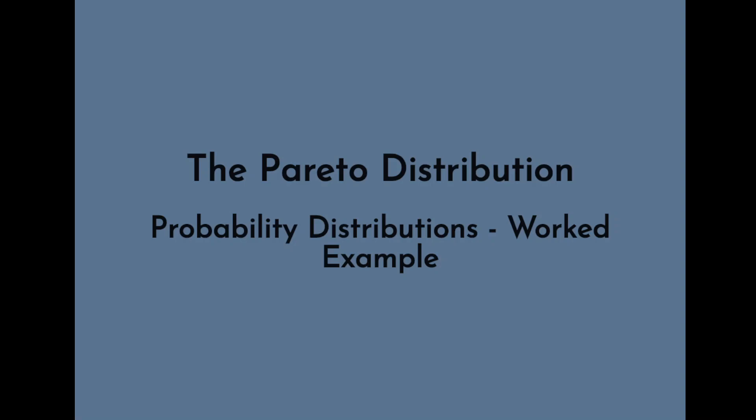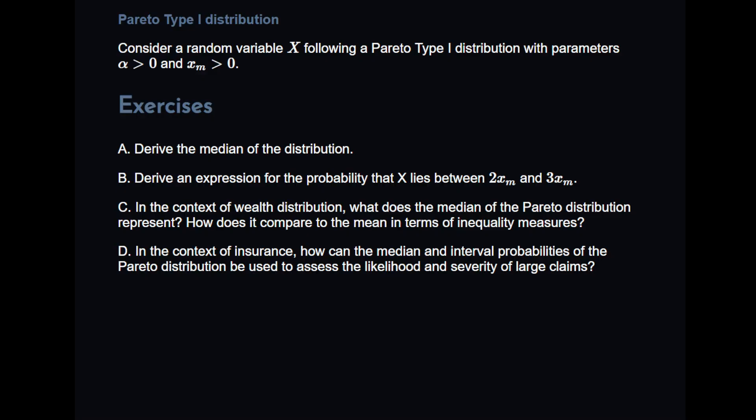This distribution is also known as the Pareto type 1 distribution, just to clarify the particular case. The reason for that is that there are other distributions that are related to the Pareto distribution called the Pareto type 2 distribution. So this is just to emphasize which particular version we are using. Consider a random variable X that follows a Pareto type 1 distribution with parameters alpha greater than 0 and XM greater than 0.